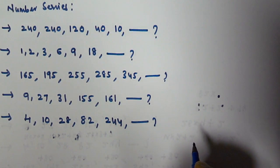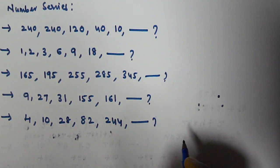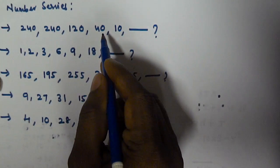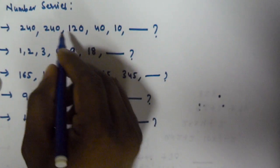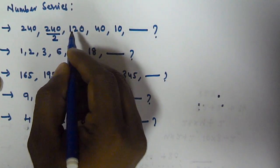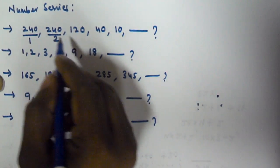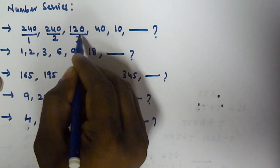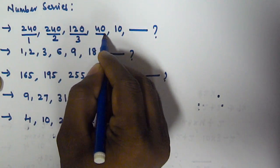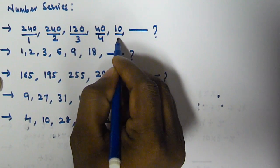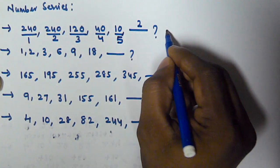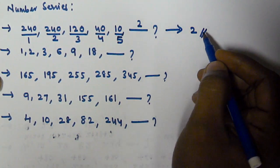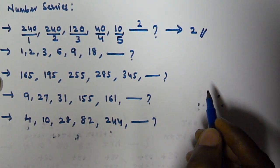For the first question, starting with 240, the second number is also 240. If you divide 240 by 2 you get 120; divide by 1 you get 240; divide by 3 you get 40; divide 40 by 4 you get 10. So we have to divide 10 by 5, which gives us 2. The next number in this series is 2.